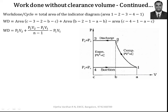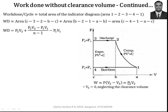Work done under process 2 to 3 is written as P2·V2. Since process 2 to 3 is a constant pressure process, the work done is P × (V2 − V3). Since we are neglecting clearance volume, V3 equals zero, so the term V3 becomes zero. Also P2 equals P3, so we can write the work done as P2·V2.